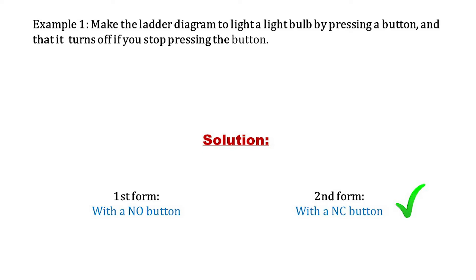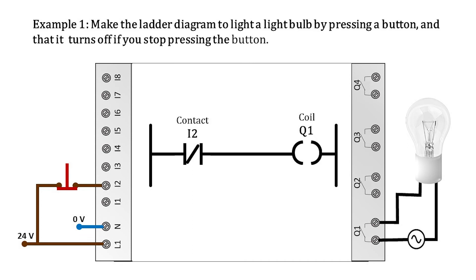Now let's see the second way, if the button is considered as normally closed. The ladder diagram would be as shown. When powering up the PLC or starting the simulation, the button immediately sends a high voltage level to the PLC input I2, which is translated as a logic one. This logical one changes the state of contact I2 — that is, it will deactivate or open it — so coil Q1 will not be activated yet. Note that all this happens when the PLC is energized without having manipulated any input; these would be the initial conditions of the entire process.